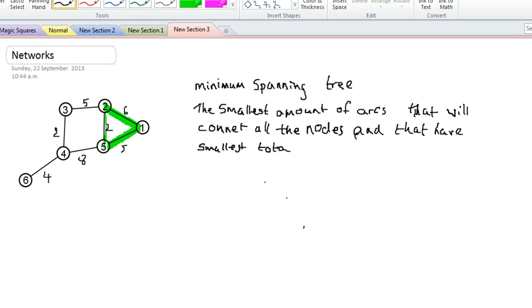If I look at these numbers on here, they might be to do with time taken to travel along it, or it might be to do with distance, or it could be whatever. The minimum would be finding the smallest total.